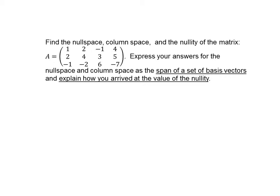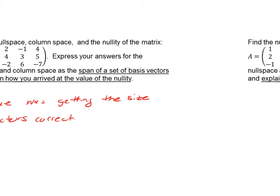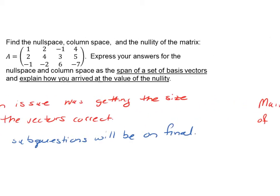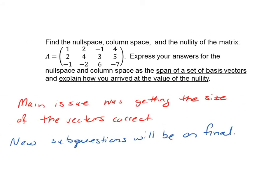What I think weirded people out was the dimensions are all weird. So you have here three rows and four columns. So it's not a square matrix. So things kind of don't look like they match up right. And with my dimension problem in the last session, last thing, you'd wonder about my own problems with this. But the main issue was getting the size of those vectors correct. And so I'm going to put new sub-questions on the final regarding this kind of a problem to guide you along. So the sub-questions will be exactly like this.